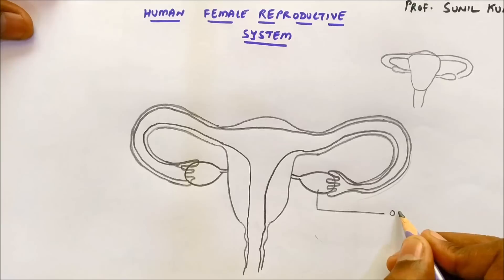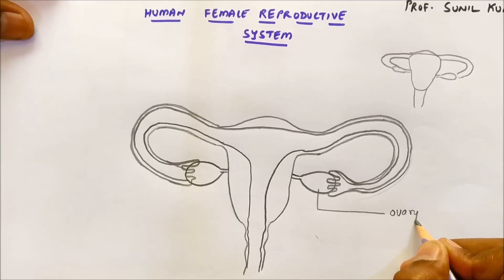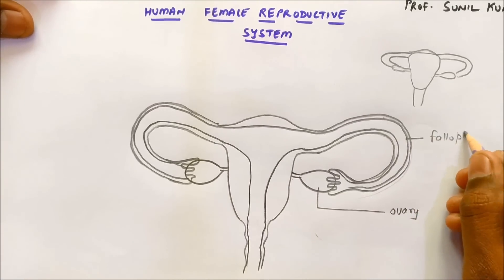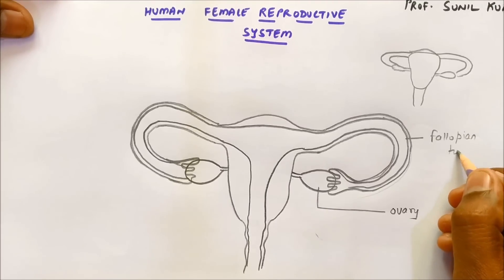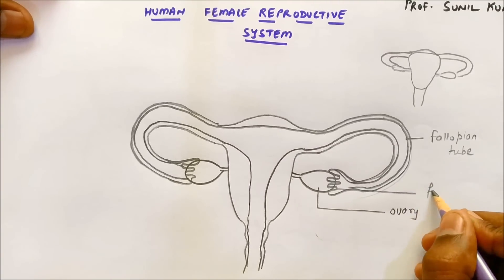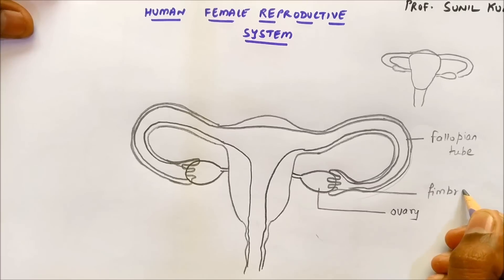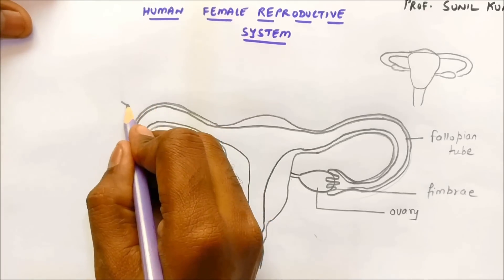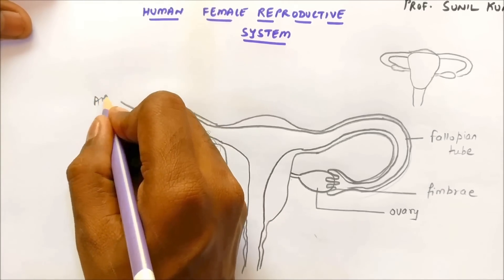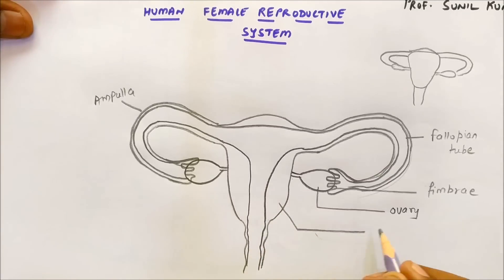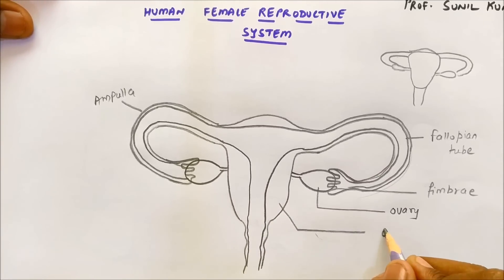For the labeling, the first part is the ovary. This part is the fallopian tube. The finger-like projections you see here are called fimbriae. The bend that you can see here — this entire bend — is called the ampulla, and the ampulla is the site for fertilization. The bigger portion is called the uterus.